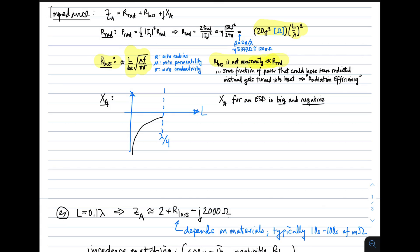And if it's important, then some fraction, some significant fraction of the power that could have been radiated will instead get turned into heat. And we recognize this using a term known as radiation efficiency. In other words, if the loss resistance is much, much less than the radiation resistance, then the overwhelming fraction of power accepted by the antenna goes into the radio wave, and we say we have high radiation efficiency.